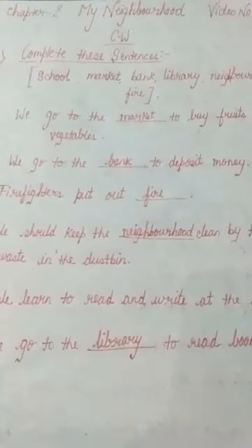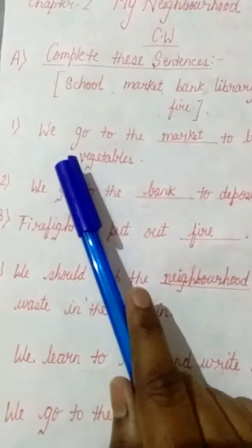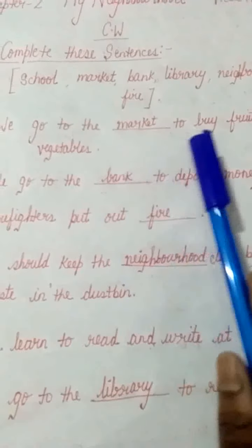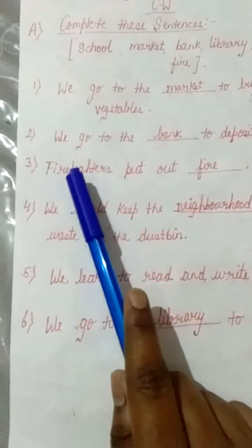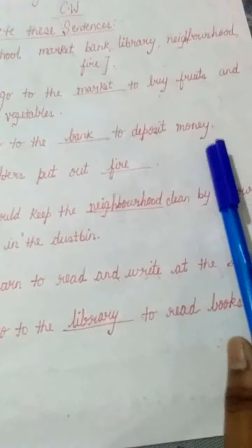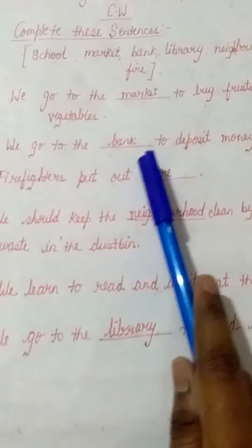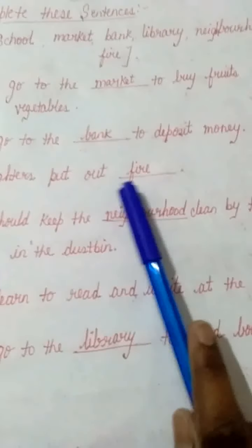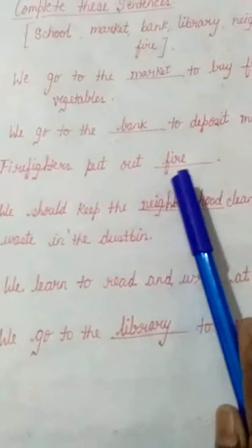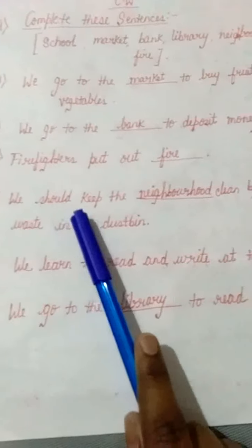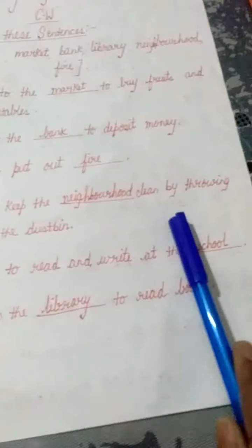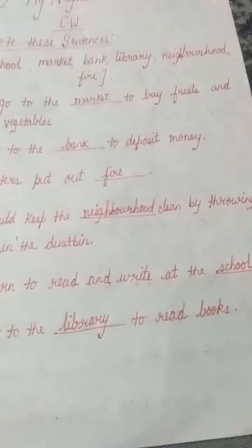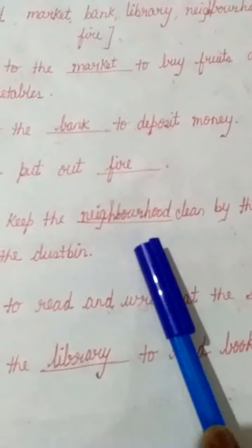Number 1: we go to the market to buy fruits and vegetables. Number 2: we go to the bank to deposit money. Number 3: firefighters put out fire. Number 4: we should keep the neighborhood clean by throwing waste in the dustbin.